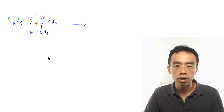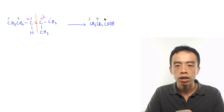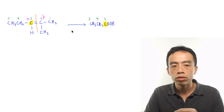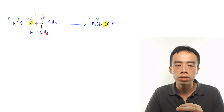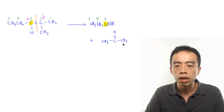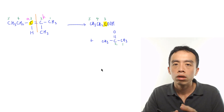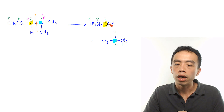Once we have sorted out the oxidation products, writing out the structures is easy. Carbon three oxidizes to a carboxylic acid: CH₃–CH₂–COOH. Carbon two oxidizes to a ketone: CH₃–C(=O)–CH₃, which is acetone. So the oxidation of this alkene gives us a carboxylic acid and a ketone as the two products.